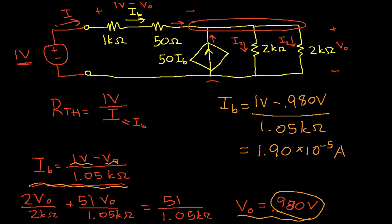With this, I can now compute RTH, it's 1 volt over 1.90 times 10 to the minus 5 amps, that's this value, which gives me 52.5k ohms.